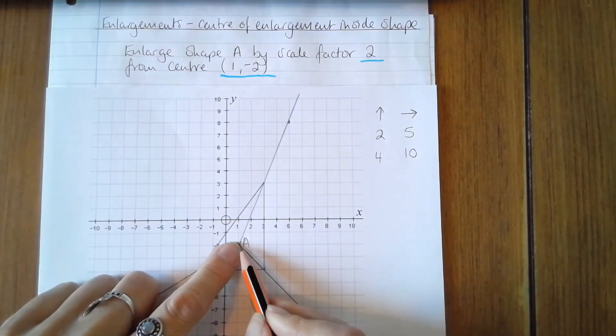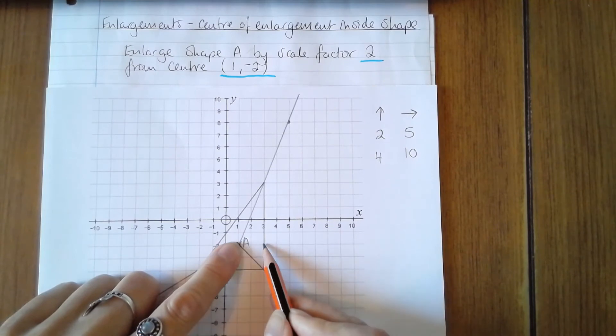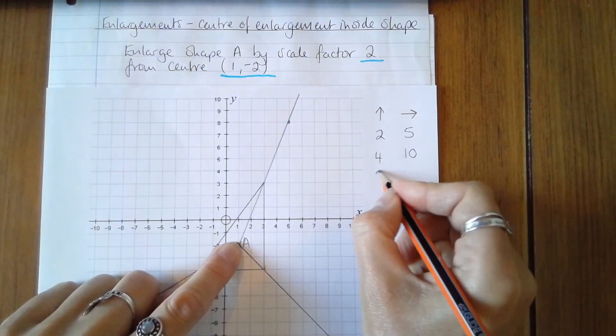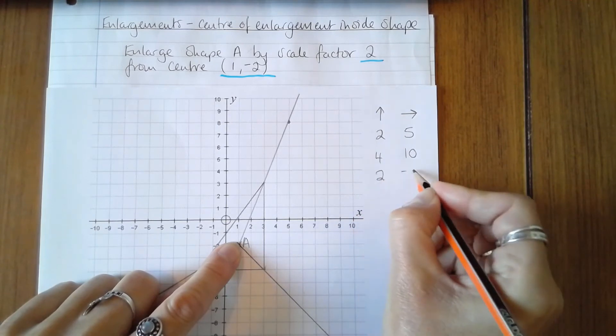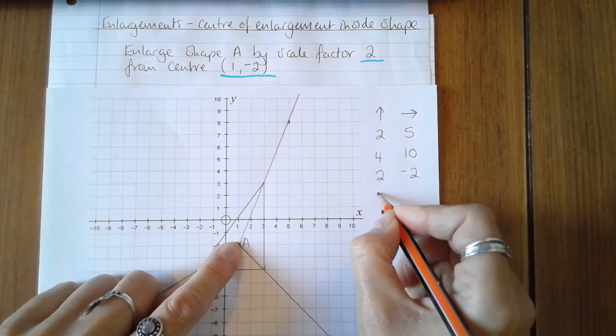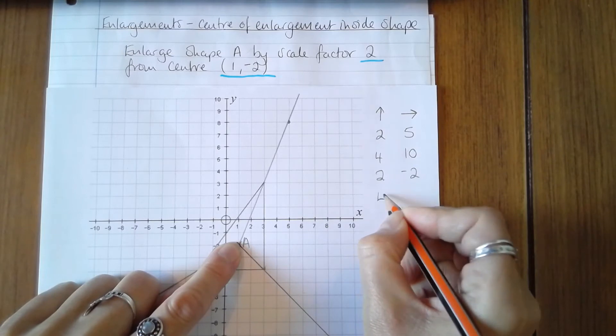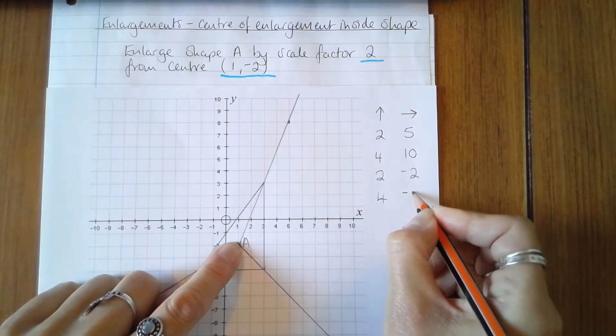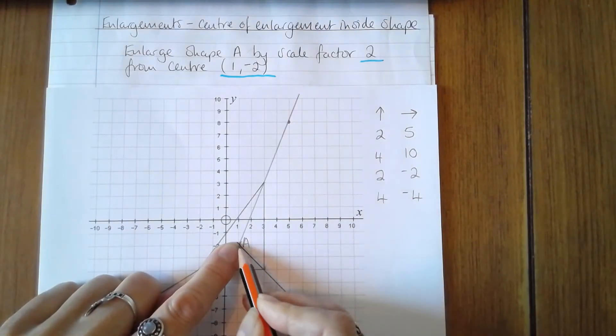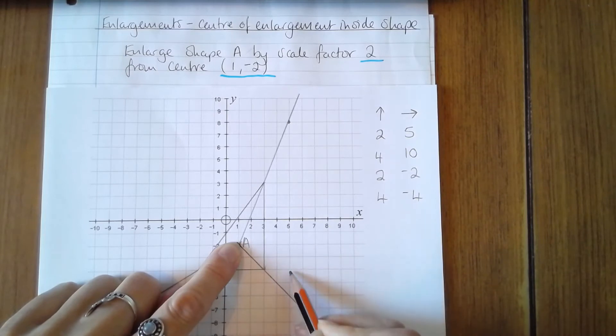The next vertex is 2 to the right and 2 down. So 2 to the right is positive, 2 down is negative. Multiplying both of those by 2, I get 4 to the right and 4 down. So 4 to the right and 4 down again is on the grid line.